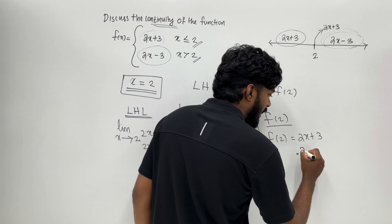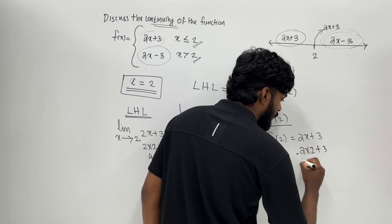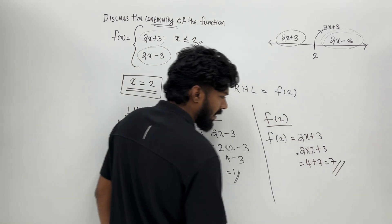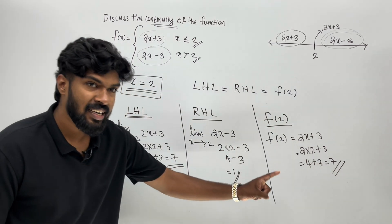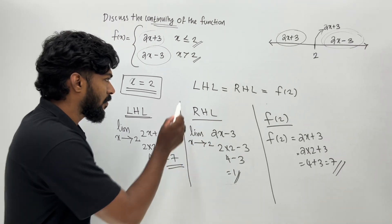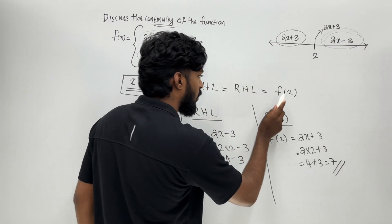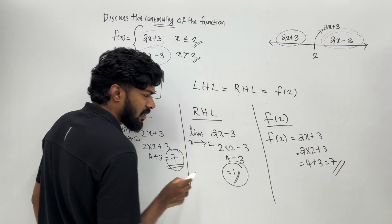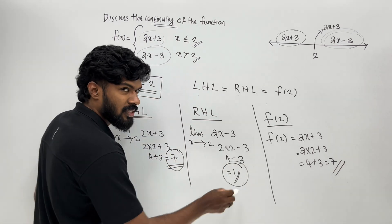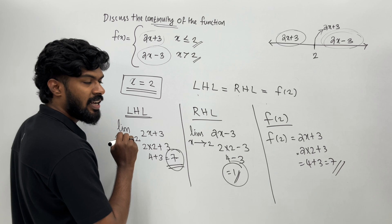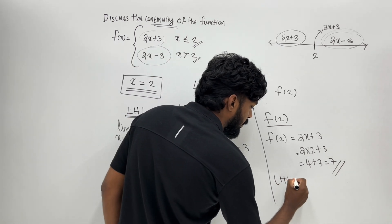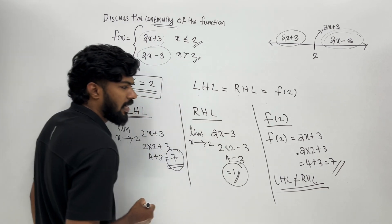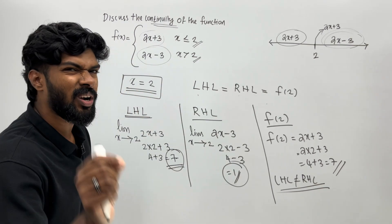2 into 2 plus 3 equals 4 plus 3, and the answer is 7. So left hand limit equals right hand limit equals f of 2, which equals 7. But wait — the left hand limit is not equal to the right hand limit. Therefore, the function is not continuous at x equals 2.